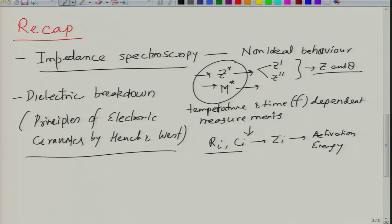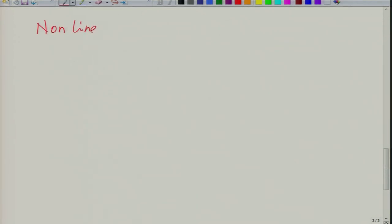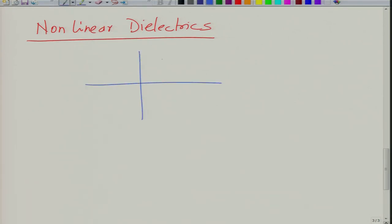This is a very nice book which gives good insight into dielectric breakdown. Now, what we are going to continue in this lecture is a discussion on what we call non-linear dielectrics. Non-linear dielectrics are materials where, when you apply an electric field, the polarization does not vary linearly. In a linear dielectric, P equals epsilon-naught times (epsilon_r minus 1) times E — polarization increases linearly with electric field, and when the field is zero, polarization is zero.